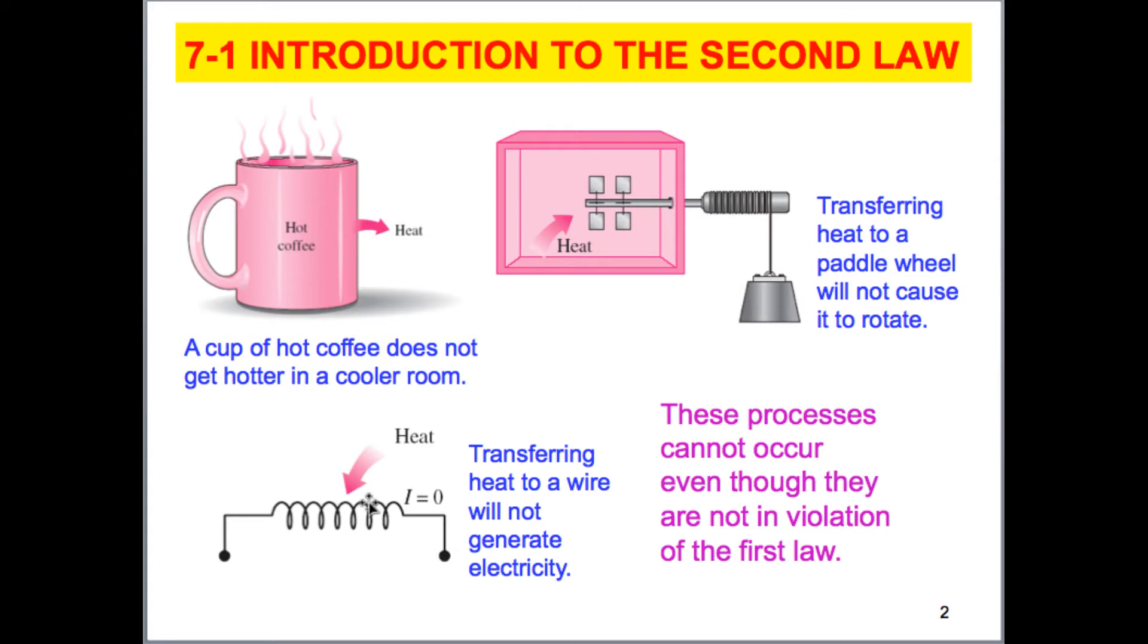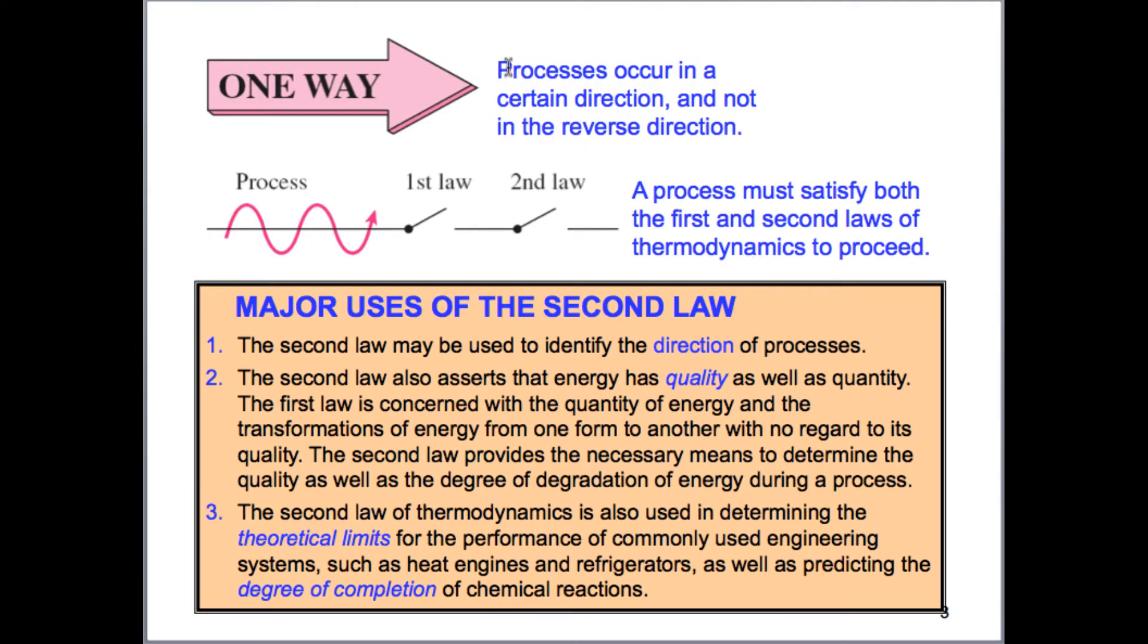Here's another example where we have a resistive heating element, like your toaster. We produce a current through here. If we have a current going through your toaster, voltage in a current, it would heat up the environment. But we know that if we just heat up this coil, that it would not produce a voltage in a current. These are all illustrations of the second law, illustrating that things have a direction. Processes occur in a certain direction. They don't occur in a reverse direction.